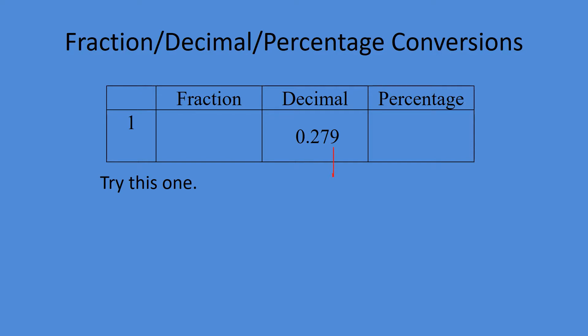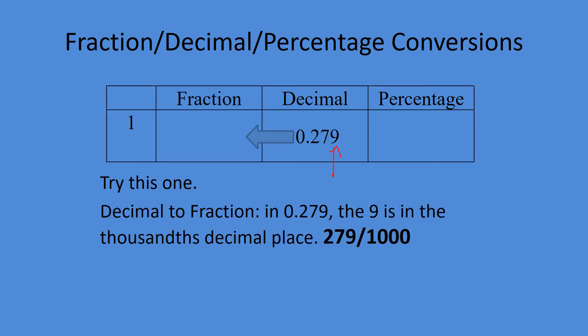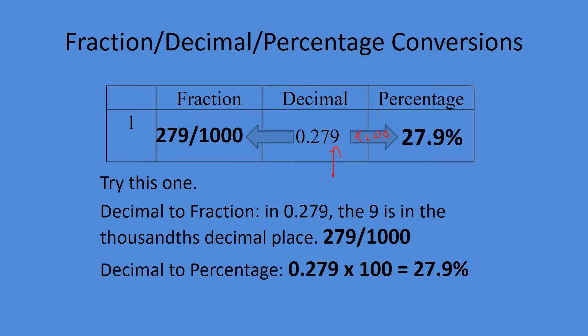Let's try this one. The nine is in the tens, hundreds, thousands, so we know our bottom number is going to be a thousand. Just put all the digits on top: 279 over a thousand. Go to percentage: times a hundred, and we get 27.9%.